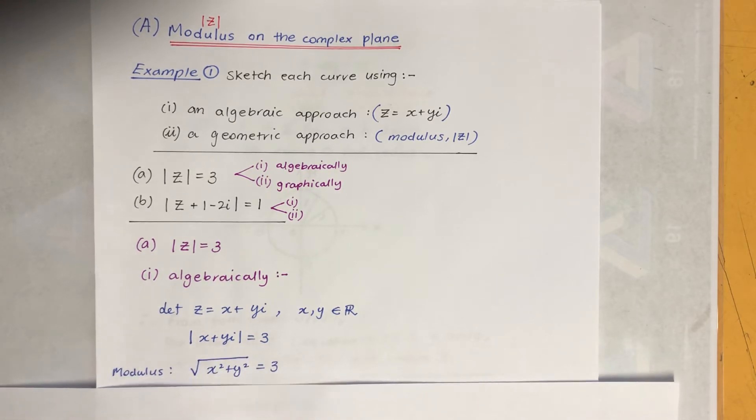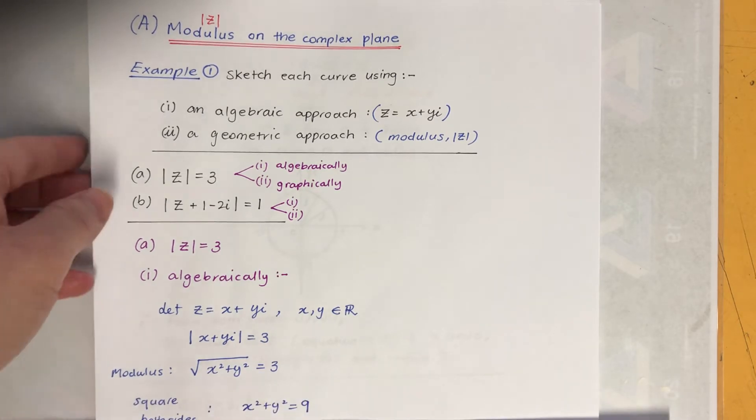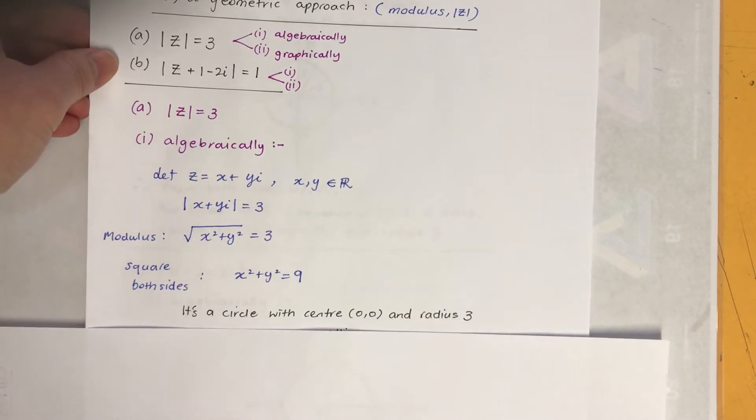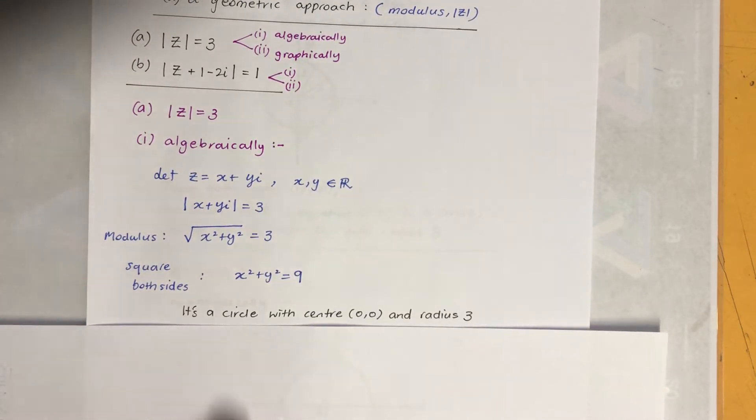Modulus will be square root of X squared plus Y squared equals 3. And we square both sides because we don't want square root. So then you can see it's a circle. X squared plus Y squared equals 9. It's a circle with center 0,0 origin and radius is 3.